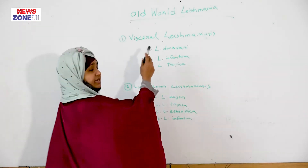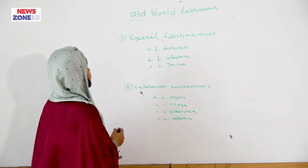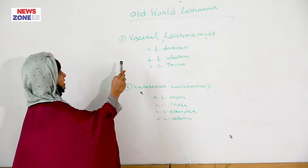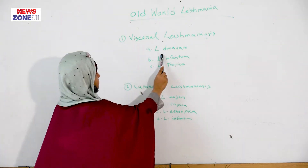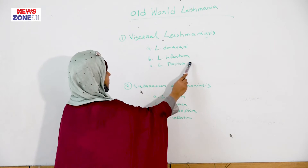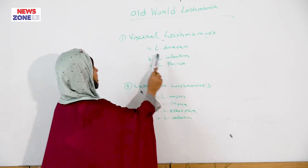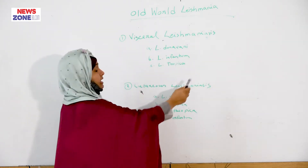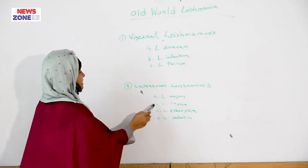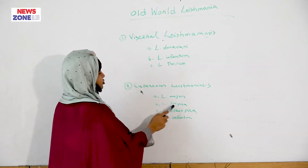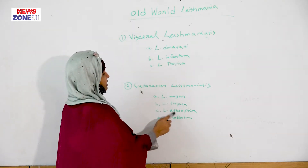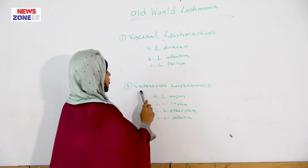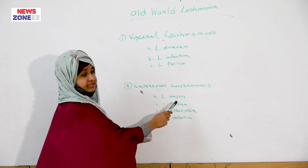Old World Leishmania includes Leishmania donovani, Leishmania infantum, and Leishmania tropica, which cause visceral Leishmaniasis. Leishmania major, Leishmania tropica, and Leishmania infantum cause cutaneous Leishmaniasis.